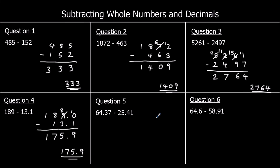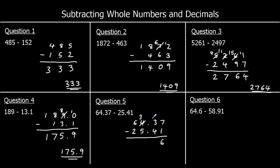Question 5: 64.37 take away 25.41. Start with the smallest column, the hundredths: 7 take away 1 is 6. The tenths: I don't want to do 3 take away 4, so I'll steal one of the ones, which would be 10 in the tenths. 13 take away 4 is 9. Decimal point stays where it is. The ones: I don't want to do 3 take away 5, so I'll steal one of the tens, which would be worth 10 in the ones. So 13 take away 5 is 8. And the tens: 5 take away 2 is 3. So I've got 38.96.